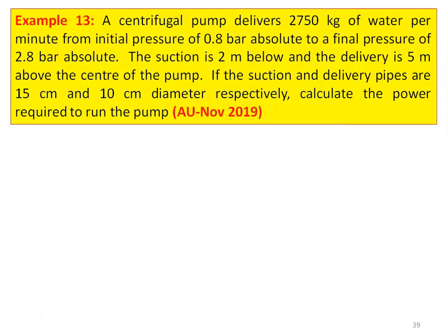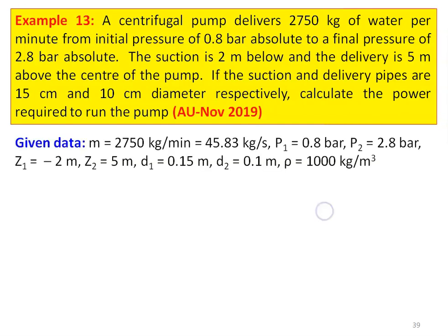Example number 13, again from the university question paper November 2019. A centrifugal pump delivers 2750 kilograms of water per minute from an initial pressure of 0.8 bar absolute to a final pressure of 2.8 bar absolute. The suction is 2 meters below and the delivery is 5 meters above the center of the pump. If the suction and delivery pipes are 15 centimeter and 10 centimeter diameter respectively, calculate the power required to run the pump. Given data: pressure at inlet P1 is 0.8 bar, pressure at outlet P2 is 2.8 bar, Z1 equal to minus 2 meters (below datum), Z2 equal to 5 meters, diameter at inlet D1 is 0.15 meter, diameter at outlet D2 is 0.1 meter. Density of water is taken as 1000 kilograms per meter cube.